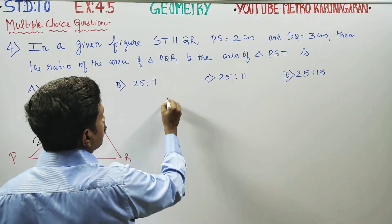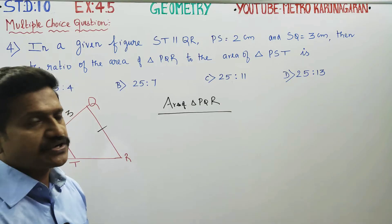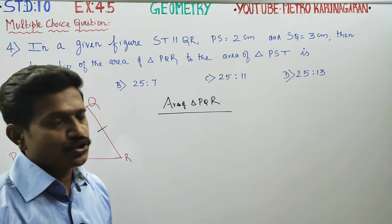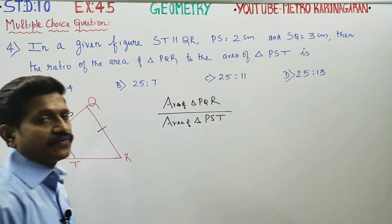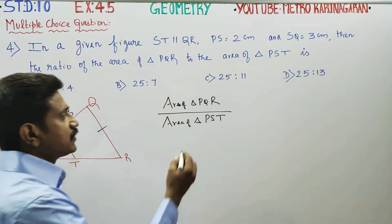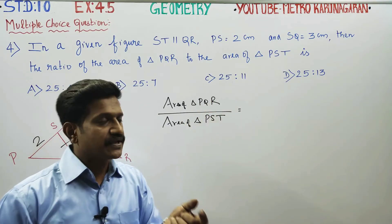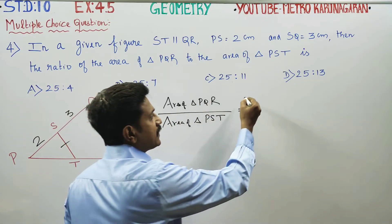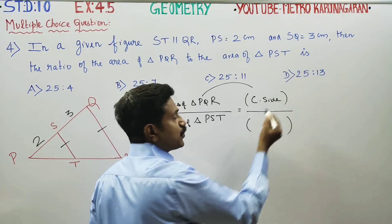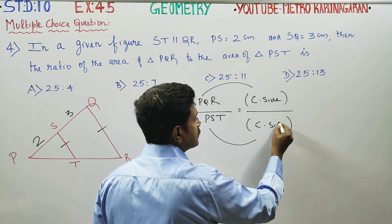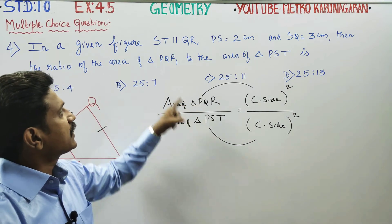For the area of triangle PQR and the area of triangle PST: the ratio of areas equals the ratio of corresponding sides squared. This triangle's area ratio is based on the corresponding sides.